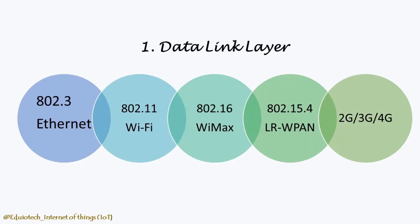First, the Datalink layer. The link layer protocol determines how the data is physically sent over the network's physical layer or medium — that is copper wire, coaxial cable, or a radio wave. These are some link layer protocols which are relevant in the context of IoT. The link layer determines how the packets are coded and signaled by the hardware device over the medium to which the host is attached, such as a coaxial cable.